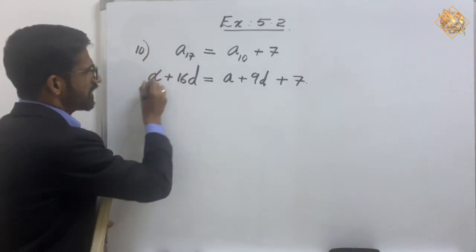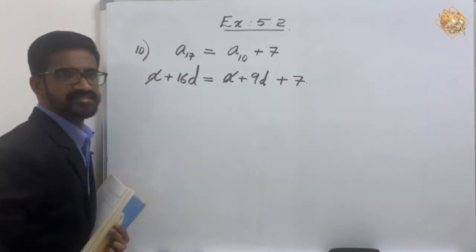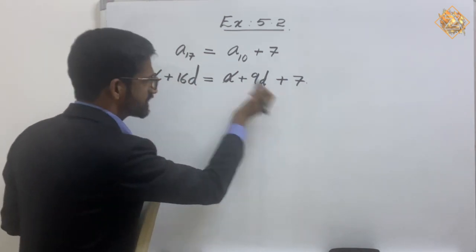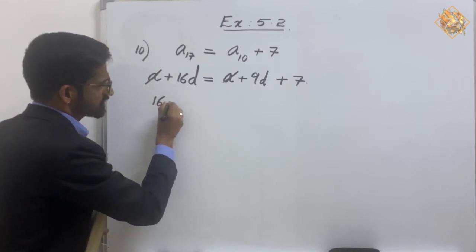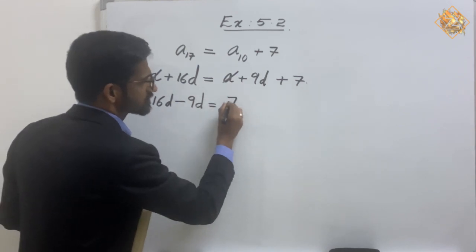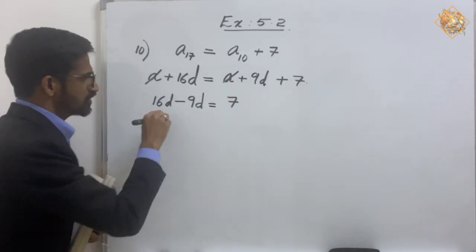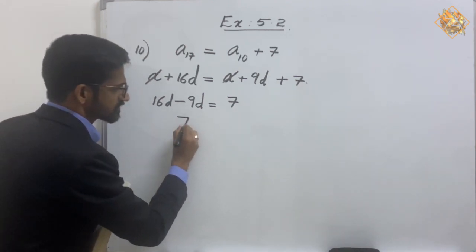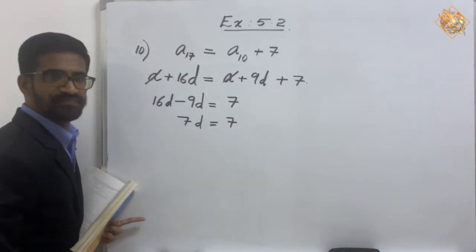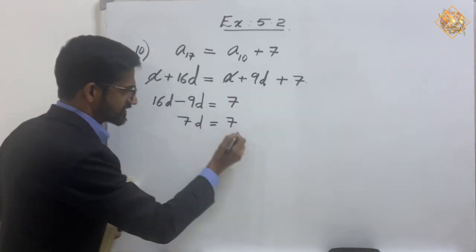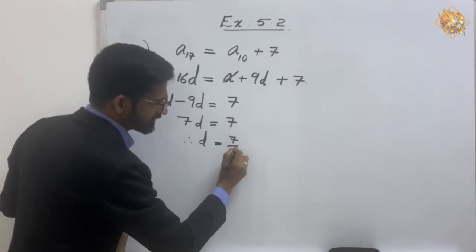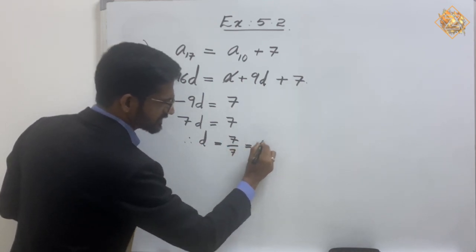Now 'a' appears on both sides and we can cancel it. So we get 16d minus 9d, taking 9d to the other side. That gives us 16d minus 9d equals 7. Therefore d equals 7 divided by 7, which is 1.